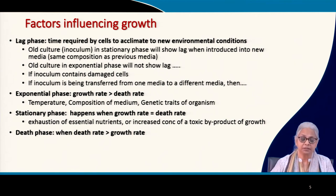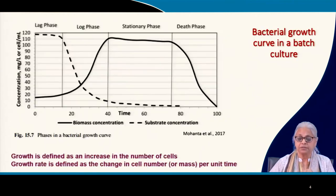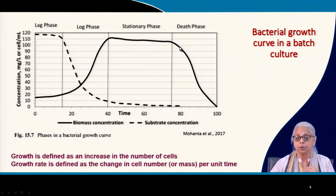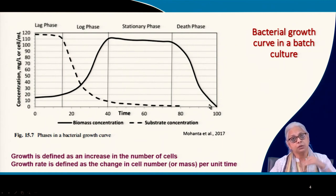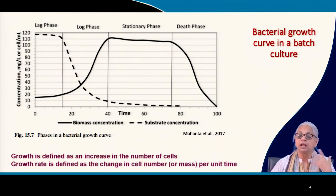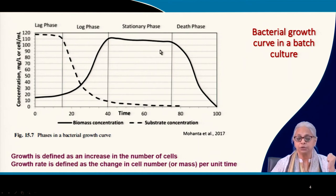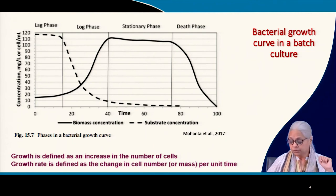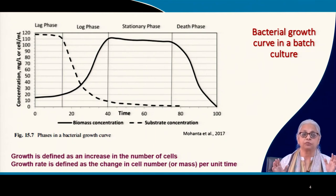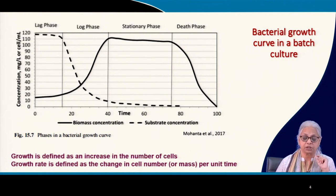Finally, we come to the death phase, where the death rate is much greater than the growth rate. At this point, cell concentration starts coming down — it can decline at an exponential rate or very slowly — depending on environmental conditions, nutrient availability, and the concentration of toxic byproducts. This is what a generic bacterial growth curve looks like in a batch culture.